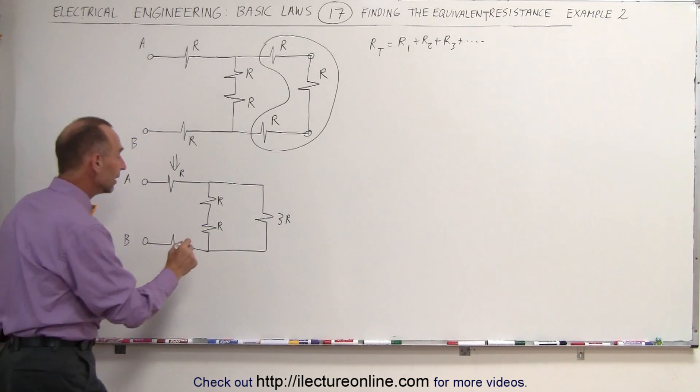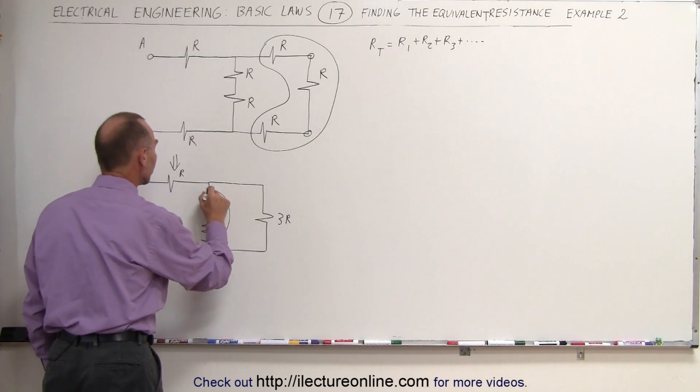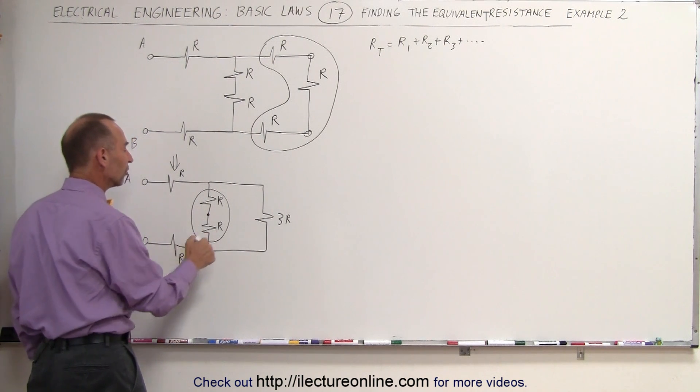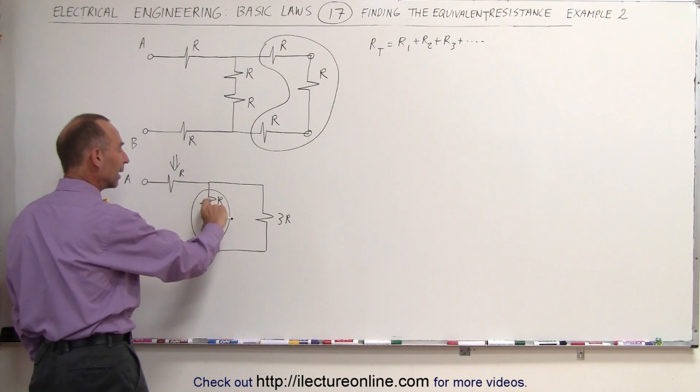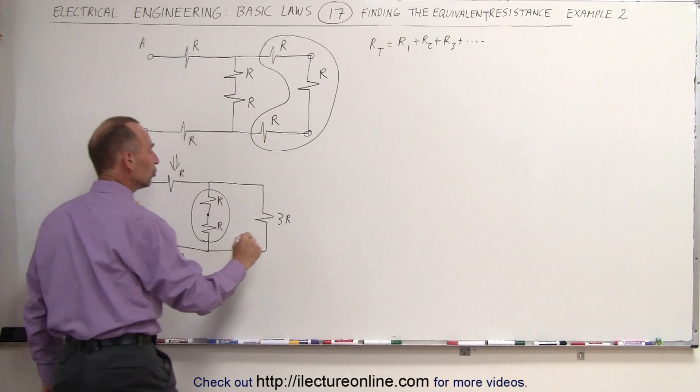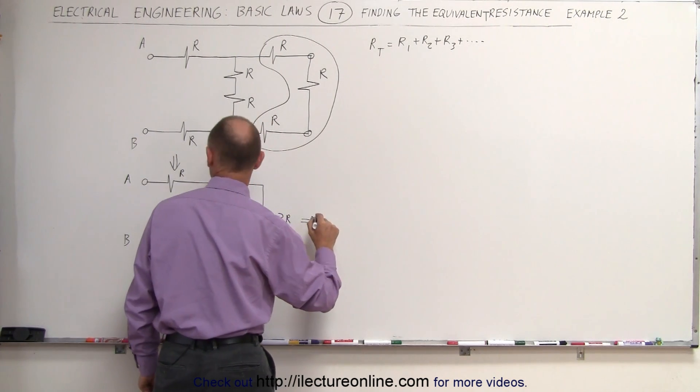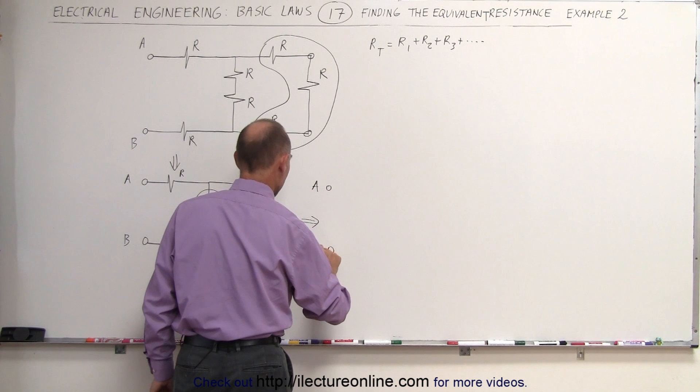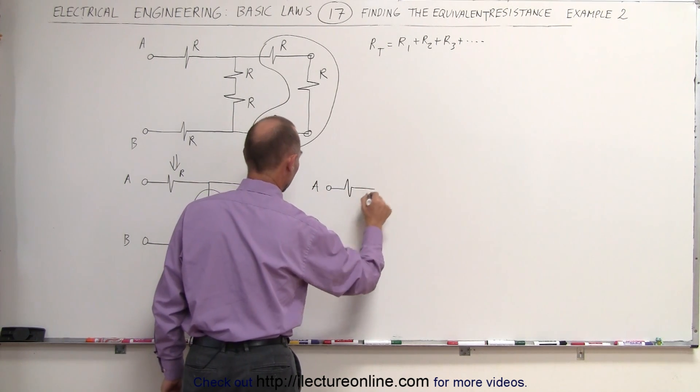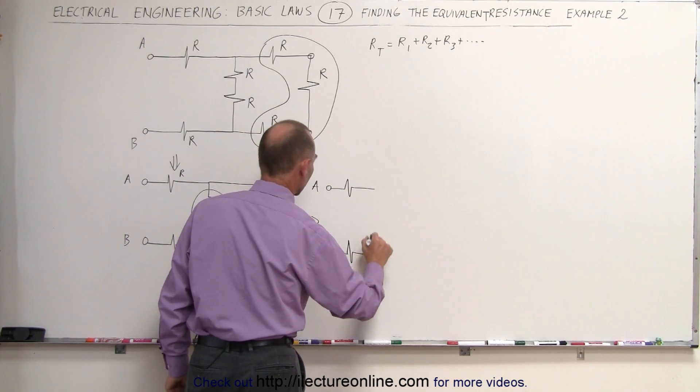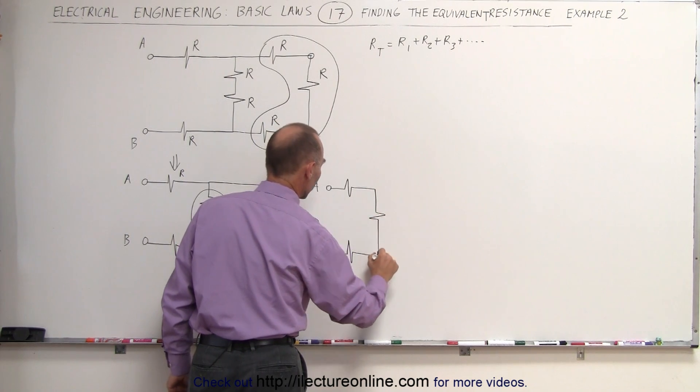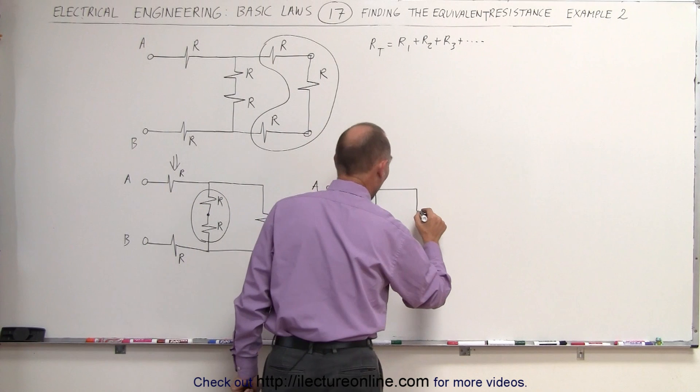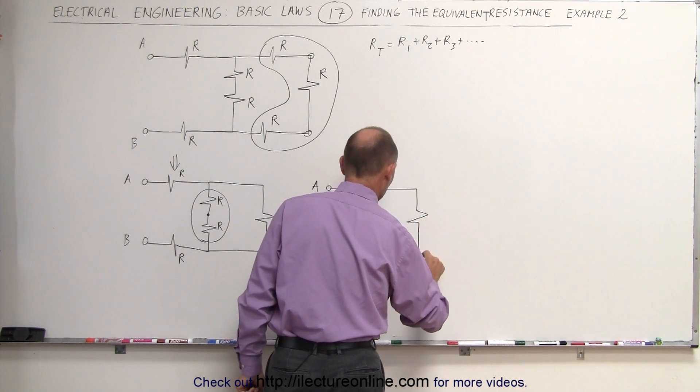Next, we can look at these two resistors. Notice that they share a common node exclusively, not shared by any of the other resistors. Those two are in parallel. We can add them together. This branch now becomes 2R, and the circuit can now be drawn as follows. We have A and B. We still have this resistor. We still have this resistor. And this becomes a 2R resistor. And this is a 3R resistor.